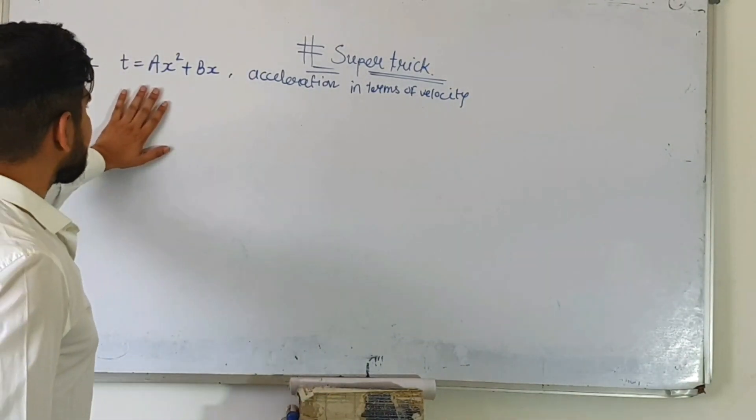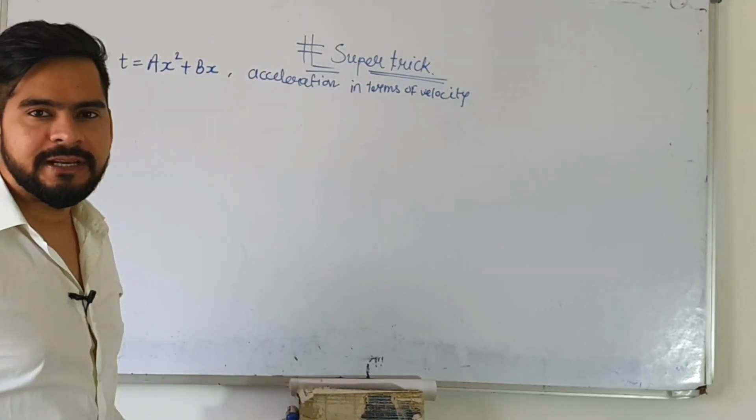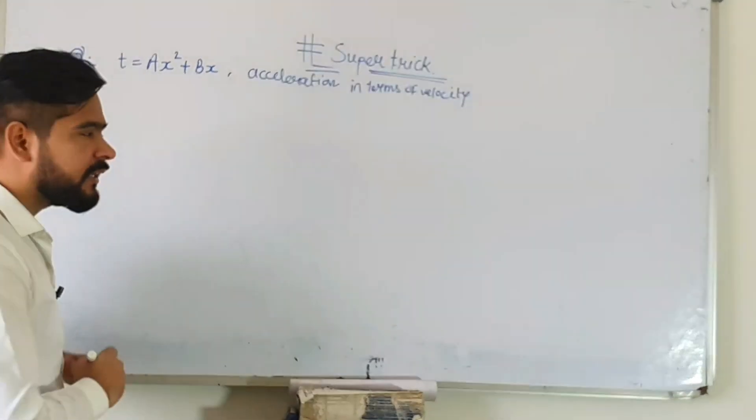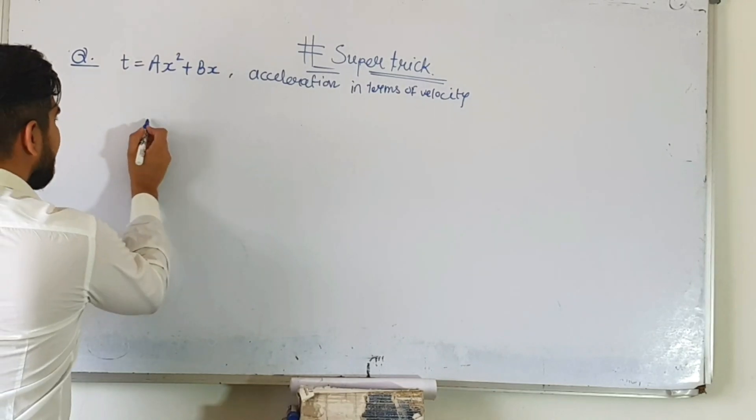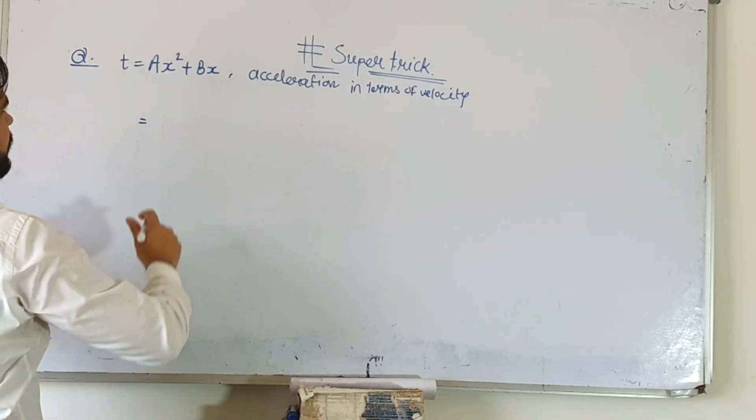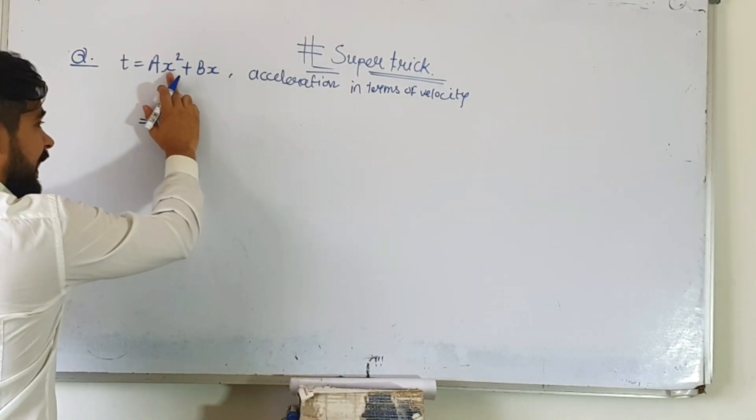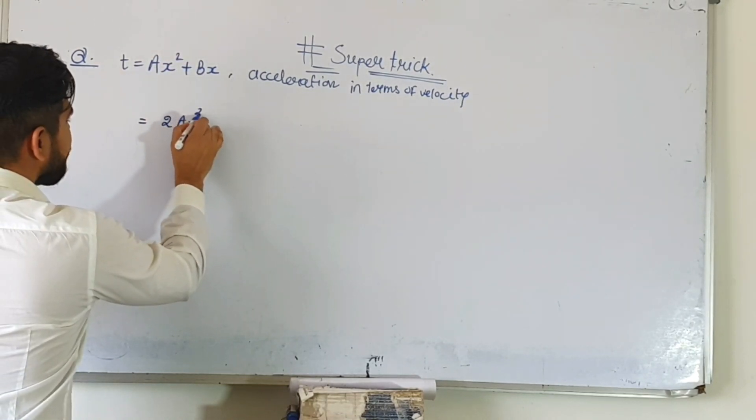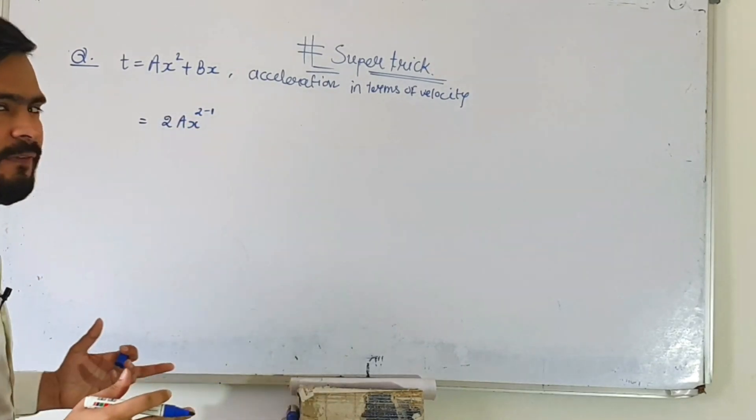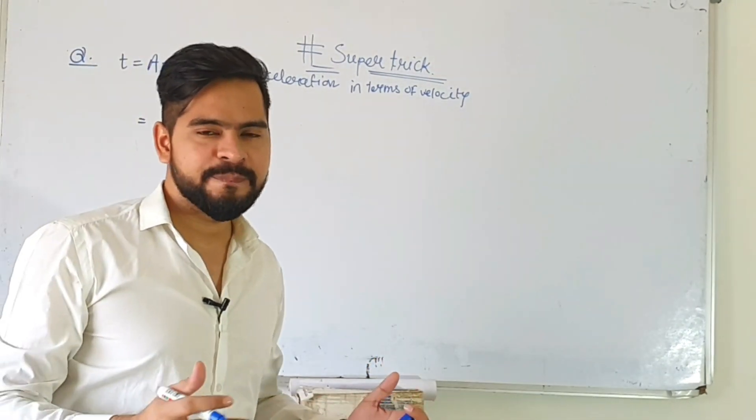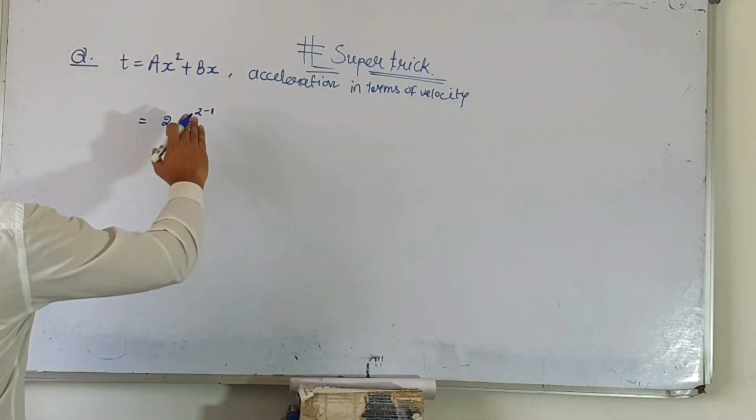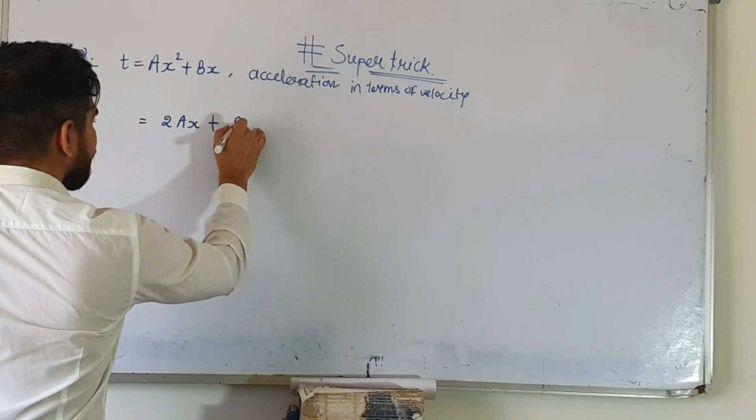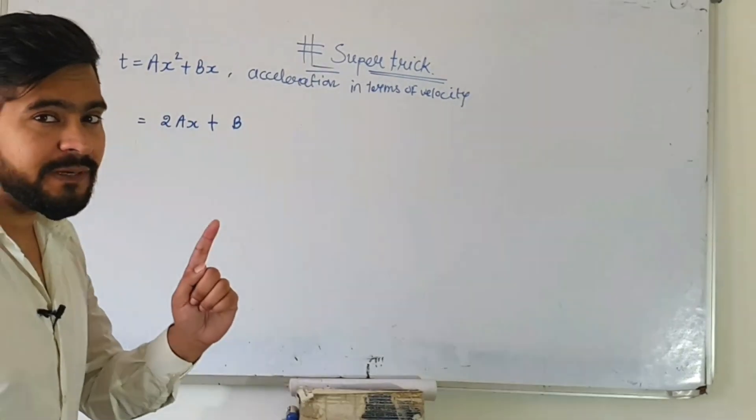For this kind of problem where you have to go from time to acceleration in terms of velocity, simply you have to do differentiation of this equation. We know that differentiation is very easy. First time when I differentiate with respect to x, x square means power forward and power minus 1. This is simple differentiation we all know. Plus bx will give b. This is the simple differentiation.